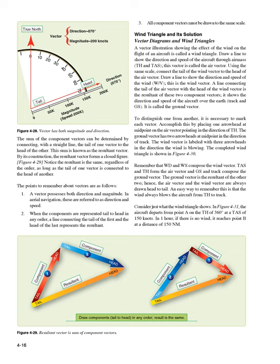The points to remember about vectors are: 1. A vector possesses both direction and magnitude — in aerial navigation, referred to as direction and speed. 2. When the components are represented tail to head in any order, a line connecting the tail of the first and the head of the last represents the resultant. 3. All component vectors must be drawn to the same scale.